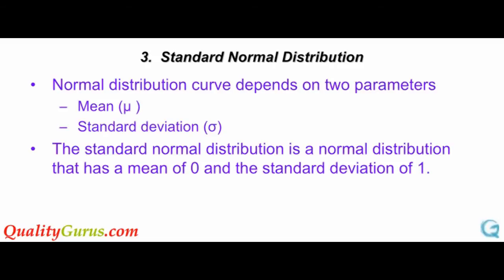Normal Distribution curve depends on the mean and the standard deviation. For example, if you draw the Normal Distribution curve for the height of males and females, you will get two different curves. Since men are in general taller than the females, or the mean height of the two groups is different.